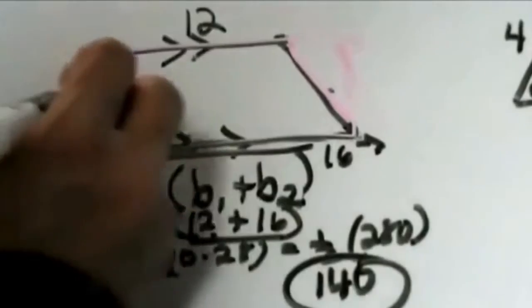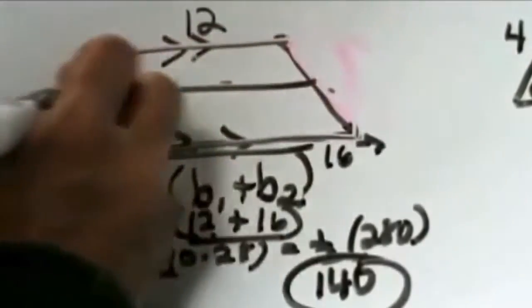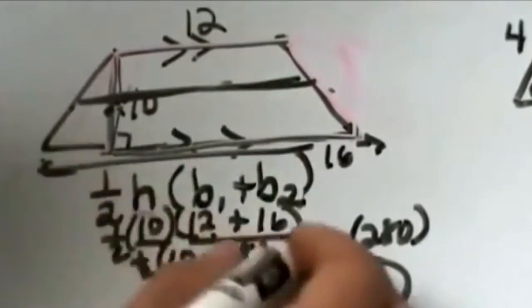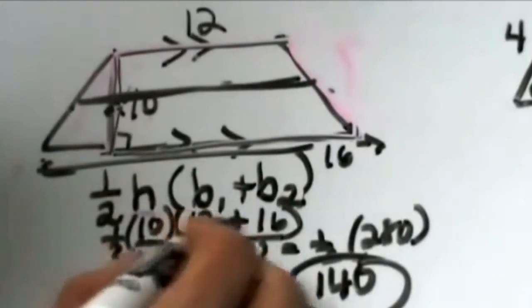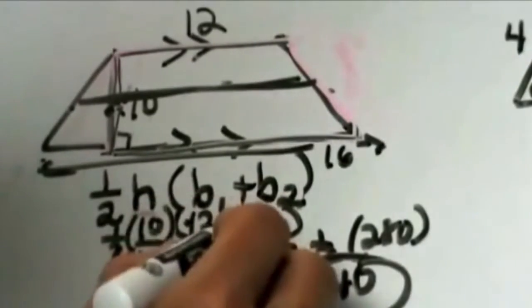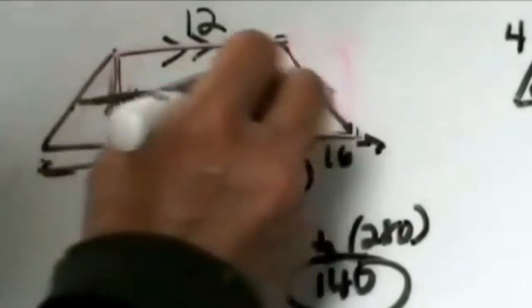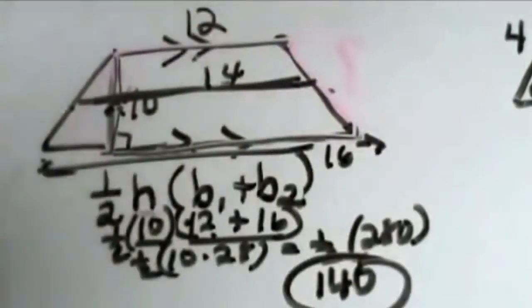Now notice this distance from here to here, that mid segment, is actually 14. So if you average 12 and 16 together, you would get a mid segment of 14 and almost treat it like a rectangle.